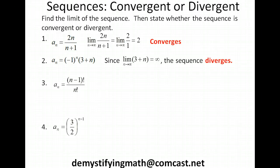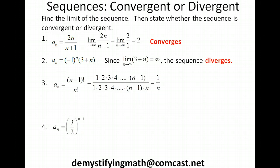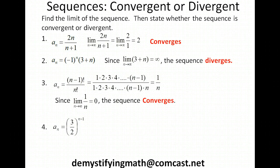For the next one, we're going to expand (n-1)! over n!. n minus 1 factorial means the product of all numbers from 1 to n-1, and n factorial is the product of all numbers from 1 to n. Everything cancels out except the n in the denominator, so this fraction simplifies to 1/n. Taking the limit as n goes to infinity of 1/n, since that goes to zero, the sequence converges.